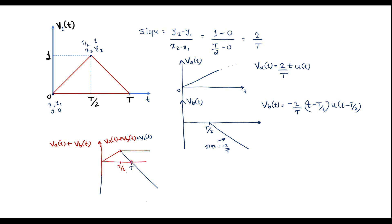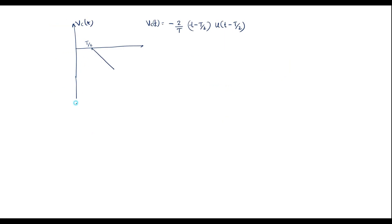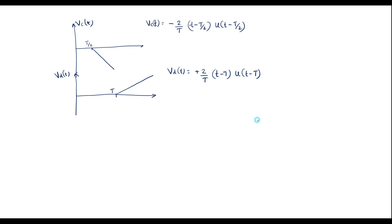To stop the signal at t = T, I add one more positive ramp signal at t = T, which I call VD of t. VD of t = (2/T) · (t − T) · u(t − T). Therefore, V1 of t = VA of t + VB of t + VC of t + VD of t.